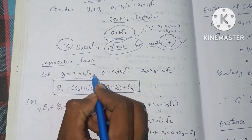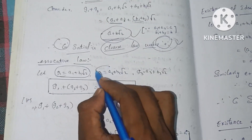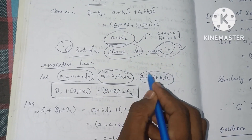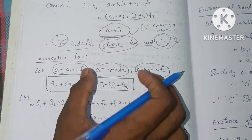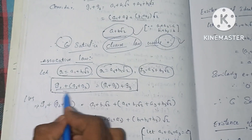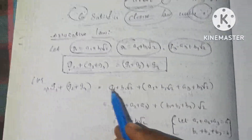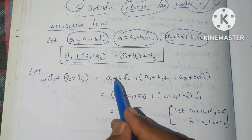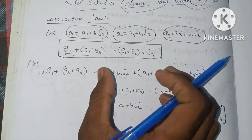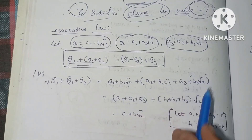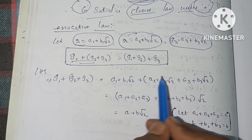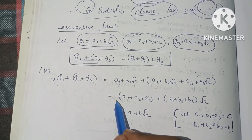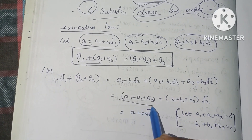Let g1 equal to a1 plus b1 root 2, g2 equal to a2 plus b2 root 2, and g3 equal to a3 plus b3 root 2. Substituting, we get a1 plus a2 plus a3 for the a terms and b1 plus b2 plus b3 for the b terms, multiplied by root 2.